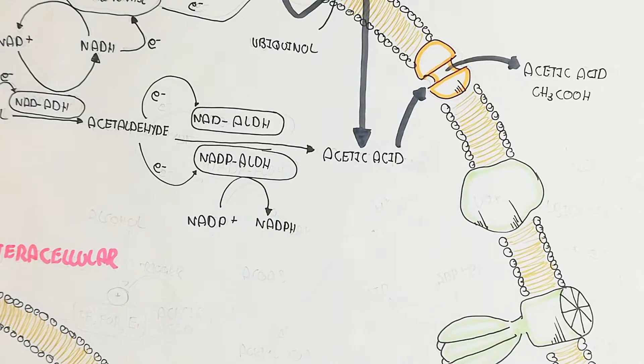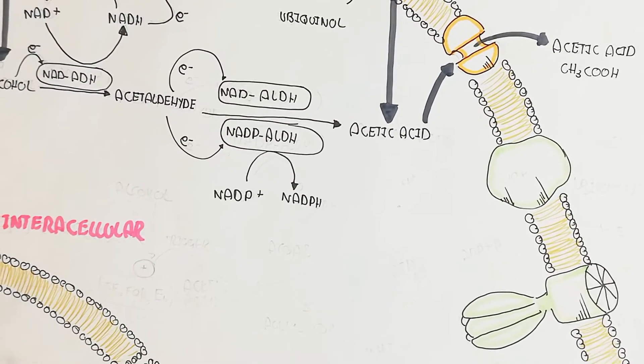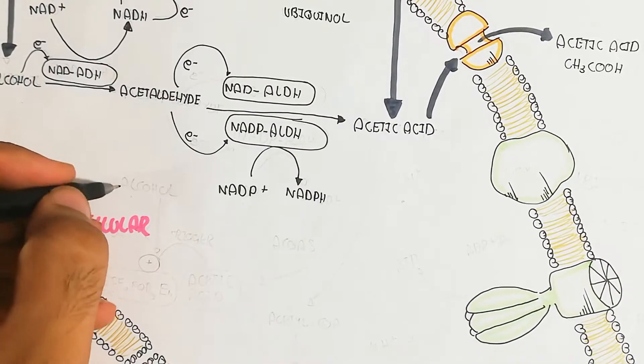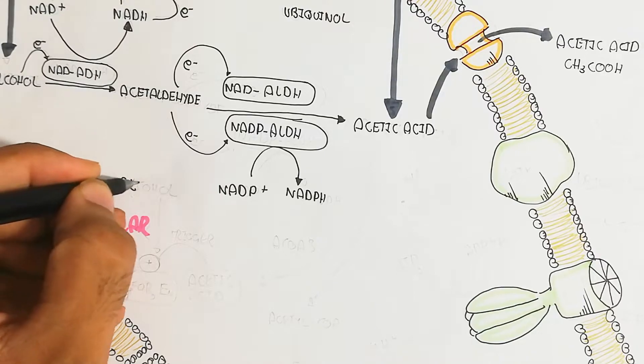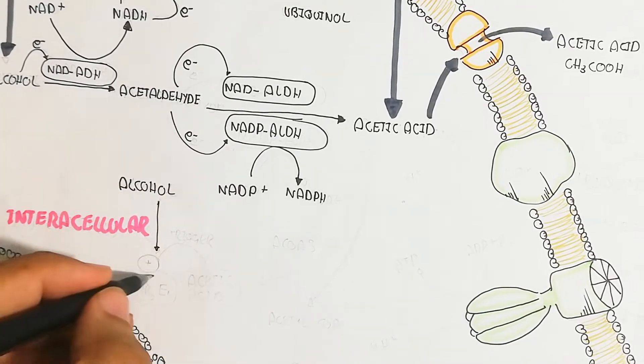The acetic acid produced is transported out of the cell through an acetic acid transporter protein channel. This completes the biochemistry of acetic acid production by acetobacter.